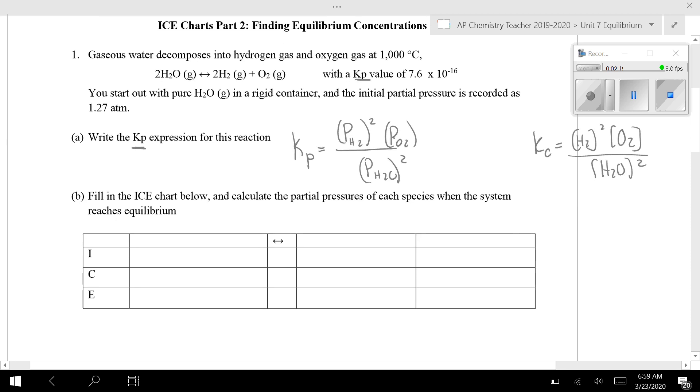And I'm going to set up my ICE chart. So this one already has kind of a template set up for you. And then I'm going to add in what I know. So I know the initial partial pressure of my water is 1.27 atmospheres. It looks like initially I start with just pure water, nothing else. So these started zero. And that's the only number I'm given. I don't know any of these values down here at equilibrium.